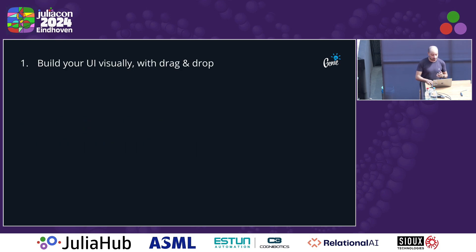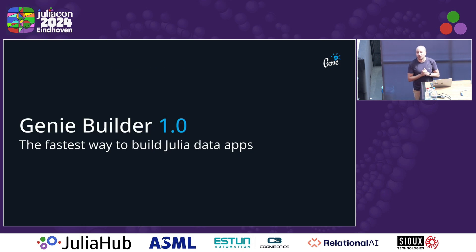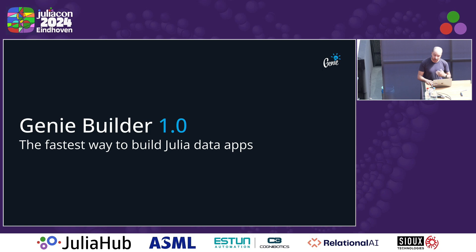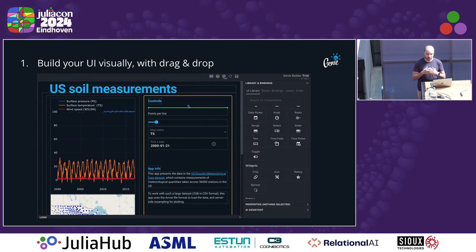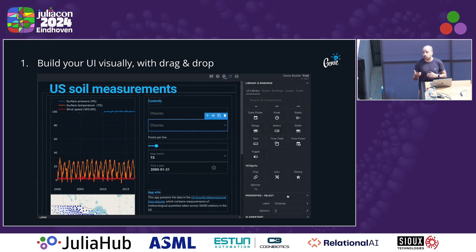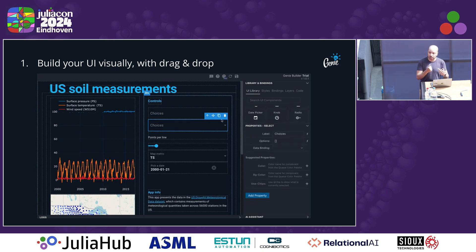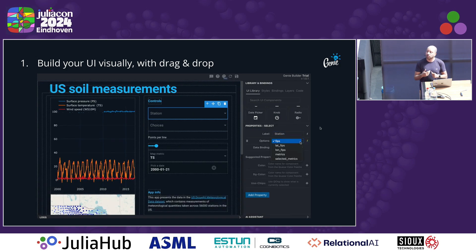Genie Builder is built on top of the open source Genie framework and brings an improved and streamlined workflow that enables users to create user interfaces visually with a drag-and-drop editor. This editor has a library of over 70 components and charts, a configuration panel, an integrated AI assistant, and a theme and style editor.